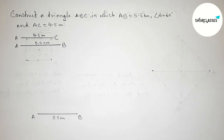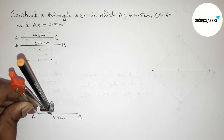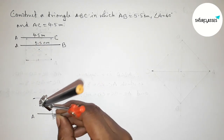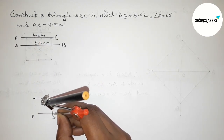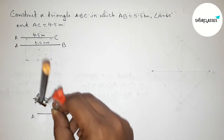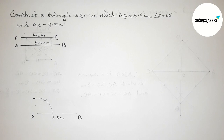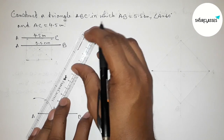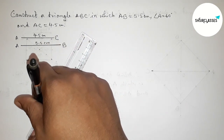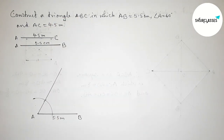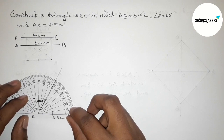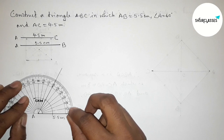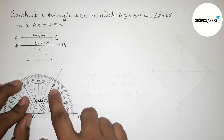Next, drawing a 60 degree angle at point A. Putting the compass on point A, taking any length, and drawing an arc. Then placing the compass at the same point and taking the same length, cutting the arc. Joining this to get a 60 degree angle. Checking with the protractor — this is perfectly a 60 degree angle.